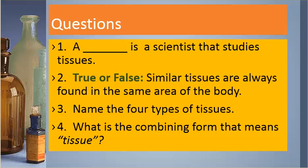Number two. True or false: Similar tissues are always found in the same area of the body.